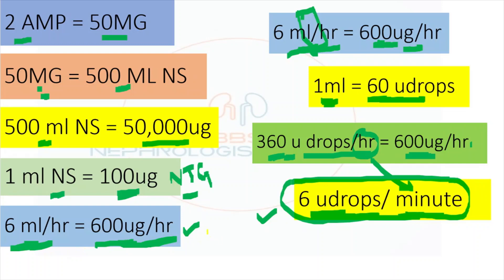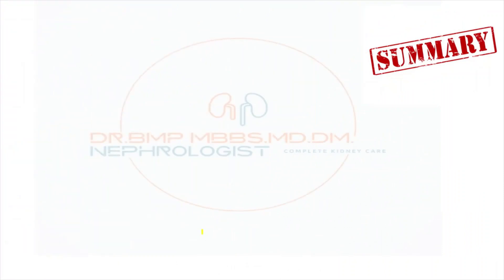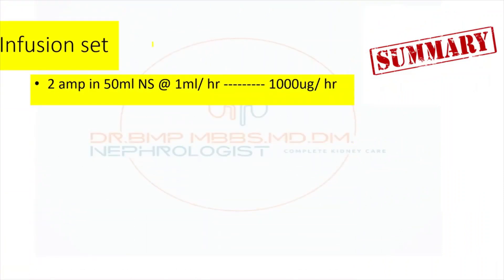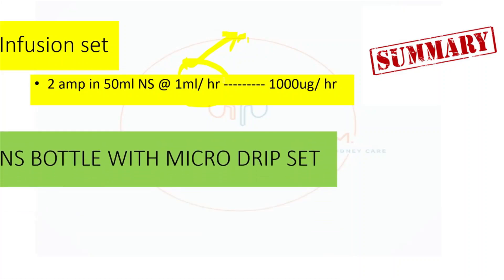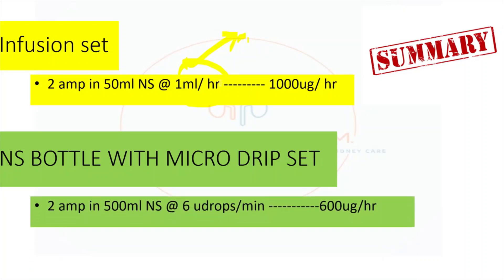To summarize: if using an infusion pump, put 2 ampules in 50 ml NS and start at 1 ml per hour, increasing gradually every 5 minutes based on patient response. The theoretical maximum is 200 micrograms per minute, but patients usually achieve the desired effect at 2–4 ml per hour. If using an NS bottle with micro-drip set, put 2 ampules in 500 ml NS and give at 6 micro-drops per minute, equivalent to 600 micrograms per hour.